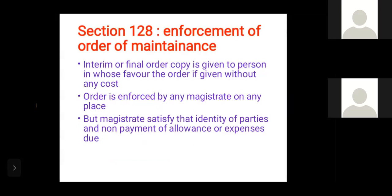Section 128 deals with enforcement of maintenance orders. A copy of the interim or final order is given to the person in whose favor the order is given without any cost to them. The order can be enforced by any magistrate in any place, provided the magistrate is satisfied about the identity of parties and non-payment of the allowance or expenses due.